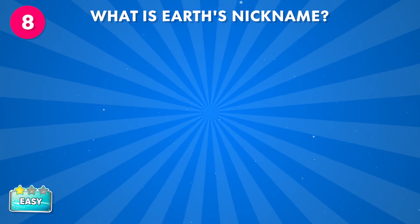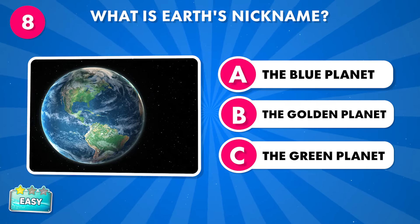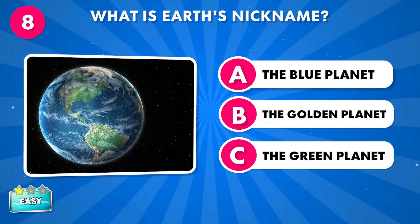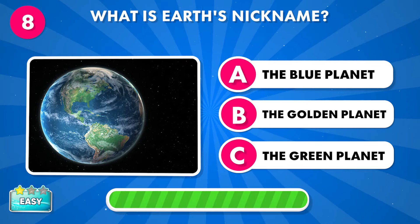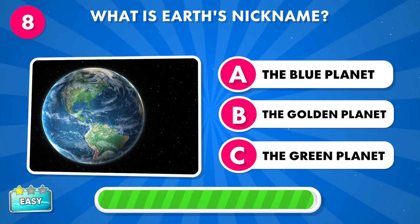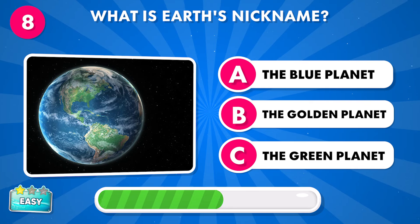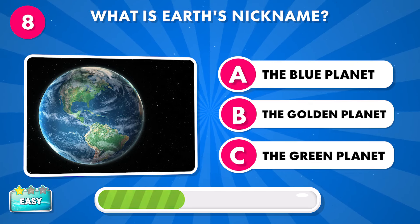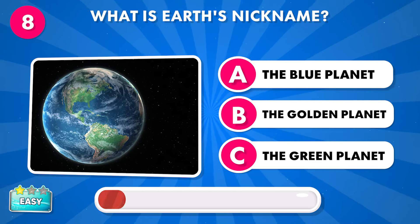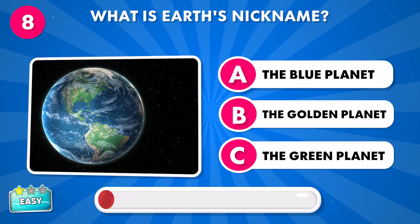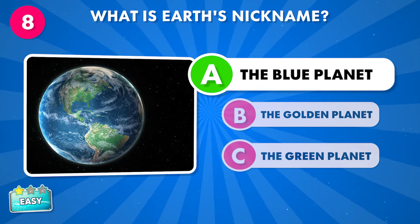What is Earth's nickname? A: the Blue Planet, B: the Golden Planet, C: the Green Planet. It's the Blue Planet.